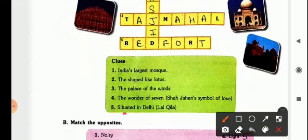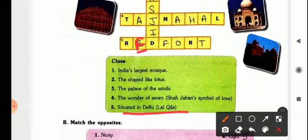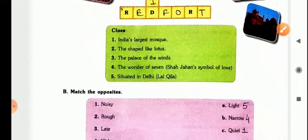And the last one, situated in Delhi, it is also known as Lalkila, it is Redford. R is given, E you have to write, D is already given, then F, O, again need not to write, R is already printed there, and then T, Redford.